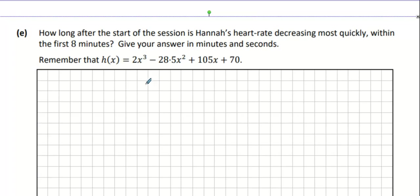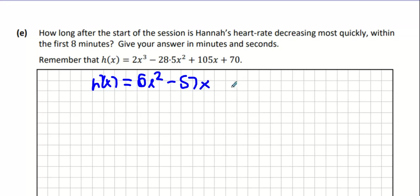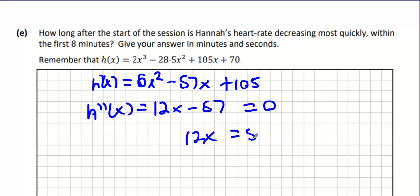So what we're going to do is we're going to do the first derivative which is 6x squared minus 57x plus 105. We're going to do the second derivative because it's the point of inflection is what we're looking for. And when we do that we get 12x minus 57. We put that equal to zero and then 12x equals 57 and x equals 57 over 12.